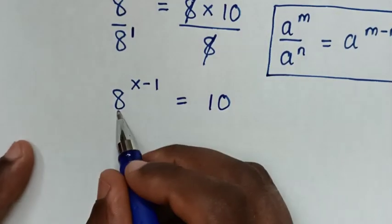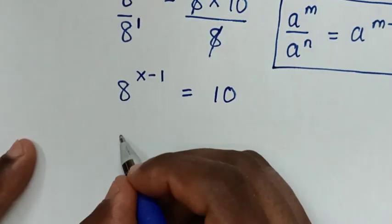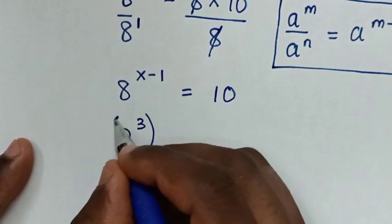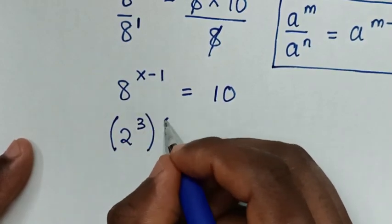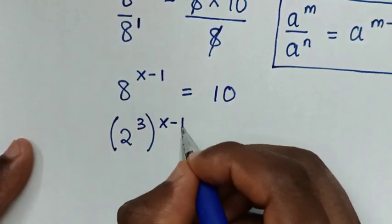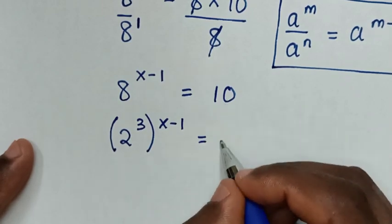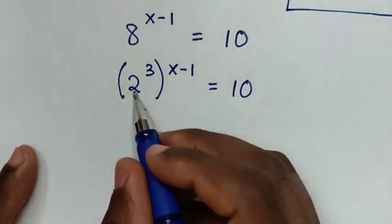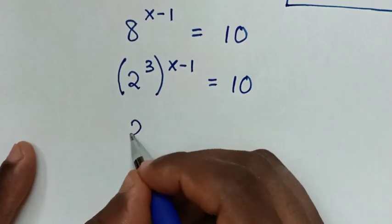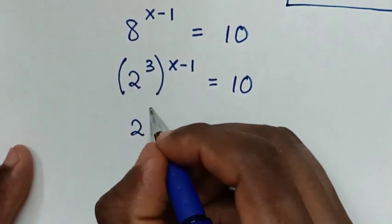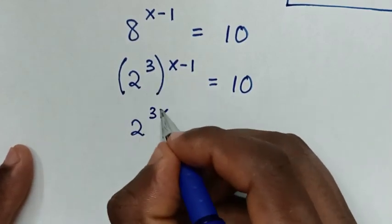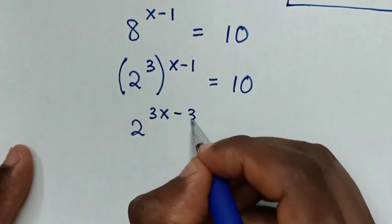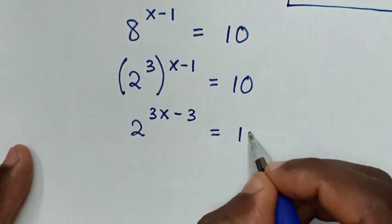Then it will be the same base: 8 power of x minus 1 is equal to 10. Then, since 8 is the same as 2 power of 3, we get 2 power of 3 times (x minus 1), which expands to 2 power of 3x minus 3, is equal to 10.